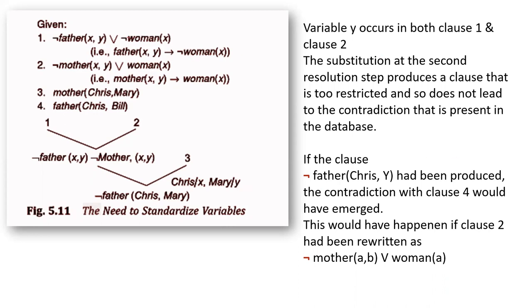When substituting negation mother and mother of father, in the place of x and y, you have to substitute the variable. Because this y variable occurs in both clause 1 and clause 2. So you have to standardize that. For this, you have to produce a contradiction.